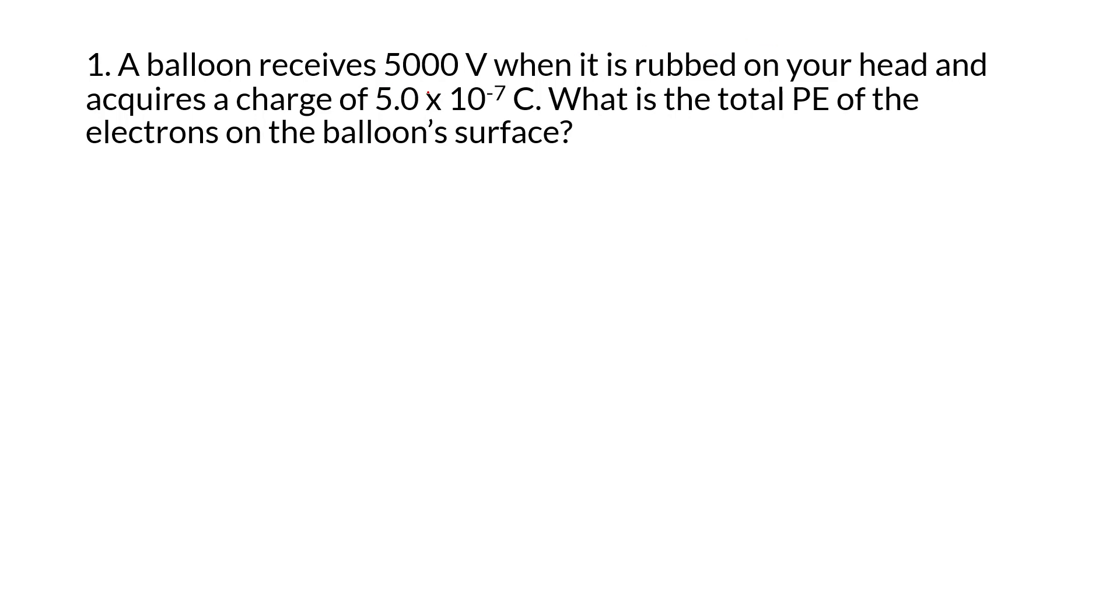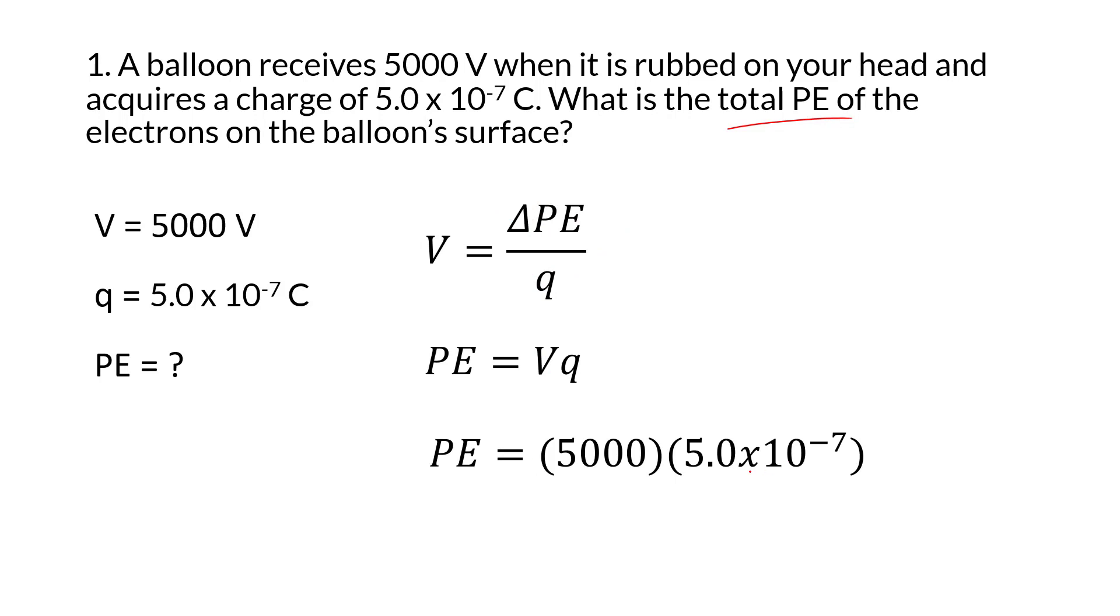Here we have a balloon with 5,000 volts and a charge of 5 times 10 to the negative 7th coulombs, and it asks you for the potential energy. The actual potential energy here would be the change in potential energy, so we solve for PE. It's asking for total potential energy. You have to rearrange the equation. PE is on the top, so you just have to get rid of Q. Multiply out the Q, you get PE equals VQ. Plug in our values, your answer here is going to be 0.0025 joules.